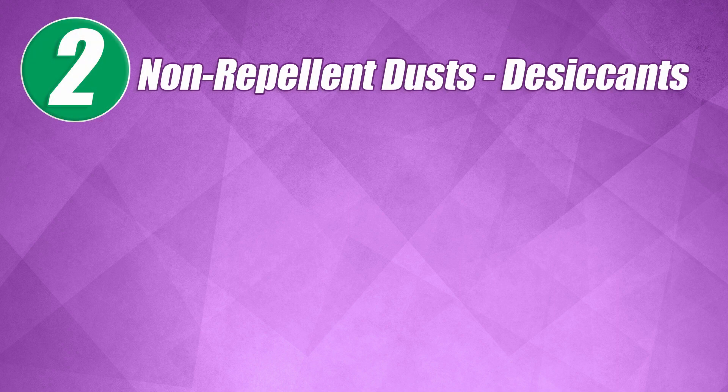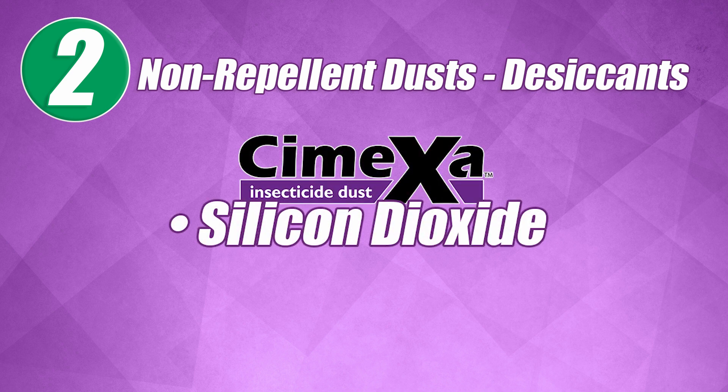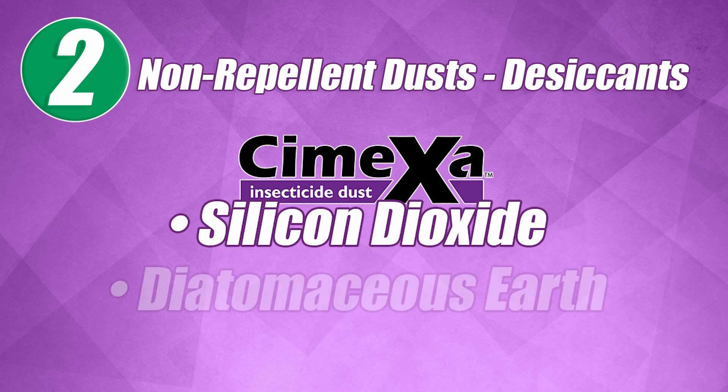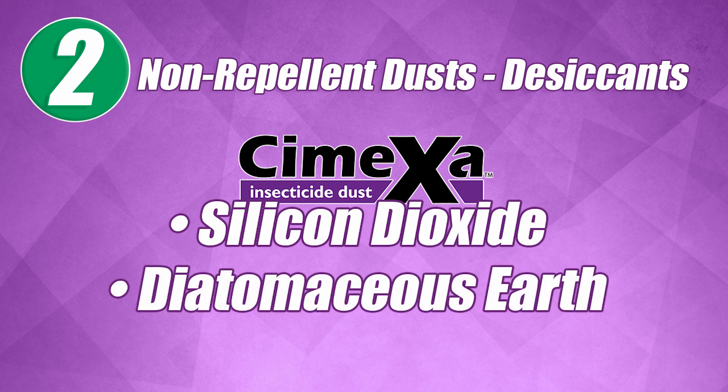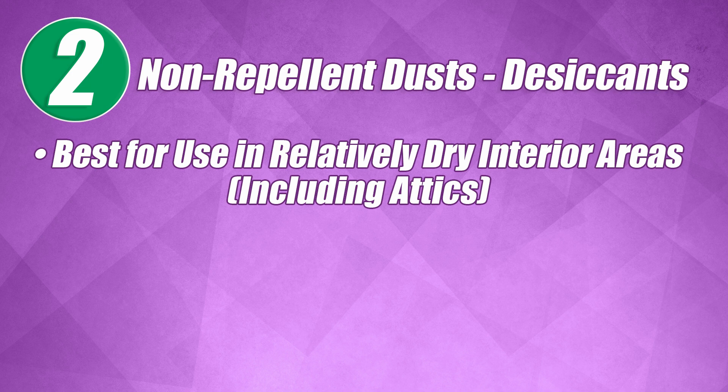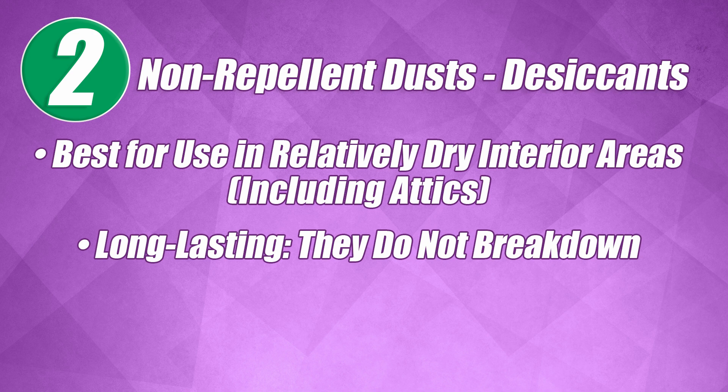Number two: non-repellent dusts that are desiccants. Examples of non-repellent desiccant dusts would be silicon dioxide, used in Rockwell Symexa dust insecticide, and diatomaceous earth. Desiccant dusts are best for use in relatively dry interior areas, including attics. They are long-lasting since they do not break down and will be effective for years as long as they remain dry.